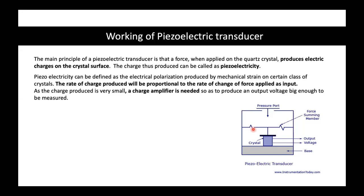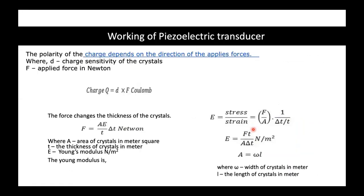To summarize: the charge produced is proportional to the rate of change of the force, and the voltage is proportional to the magnitude of the applied force. The principal equation states that the generated charge Q equals d times F, where d is the charge density of the crystalline material and F is the applied force in Newtons.